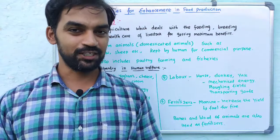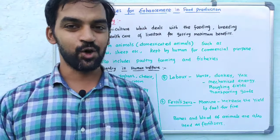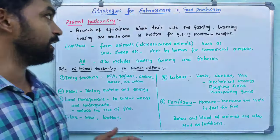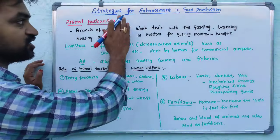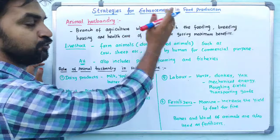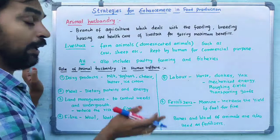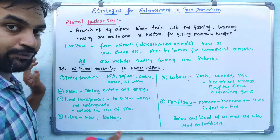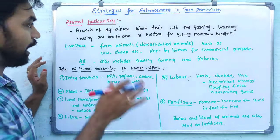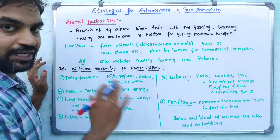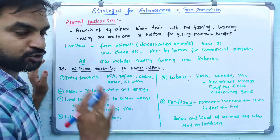Hi friends, welcome to Biology Simplified Tamil. We are Sennil Nathun. Today we are going to talk about strategies for enhancement in food production: plant breeding, animal breeding, and animal husbandry detailed introduction.